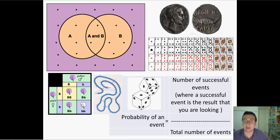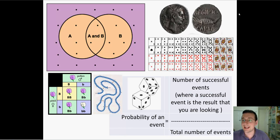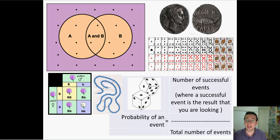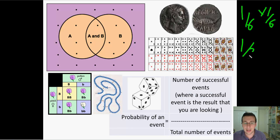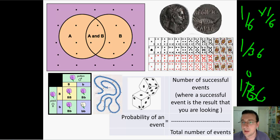What are the chances of getting either snake eyes or a pair of sixes? The chance of snake eyes is one-sixth times one-sixth, which equals one out of 36. The chance of getting a pair of sixes is also one out of 36. Since it's OR, you add them: two out of 36, or one out of 18. That won't happen very often.